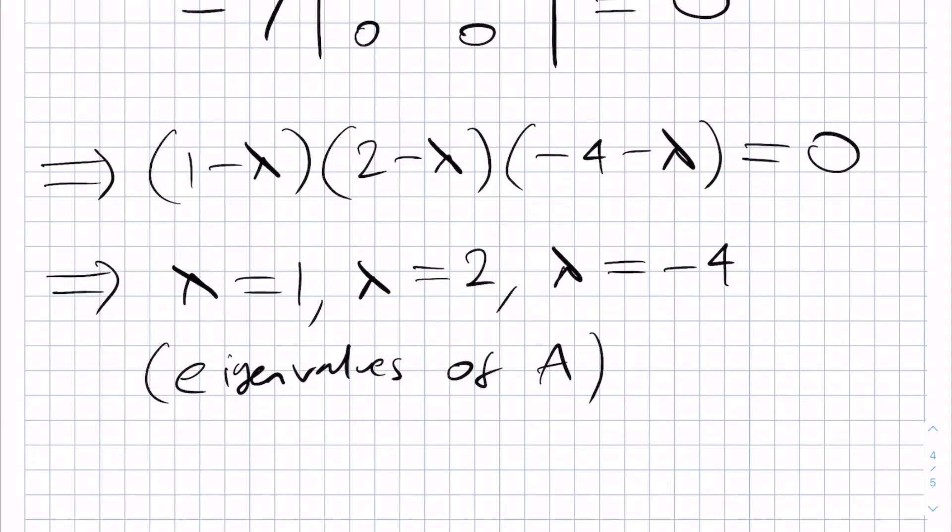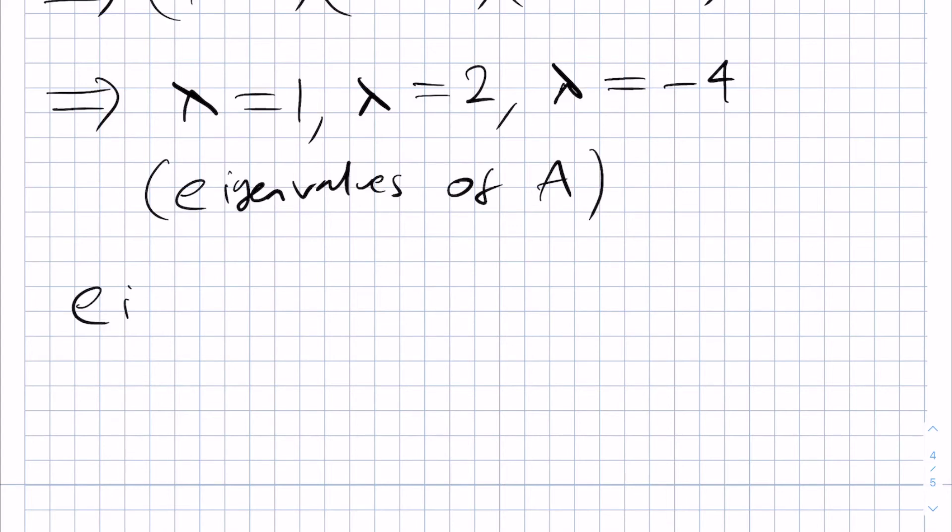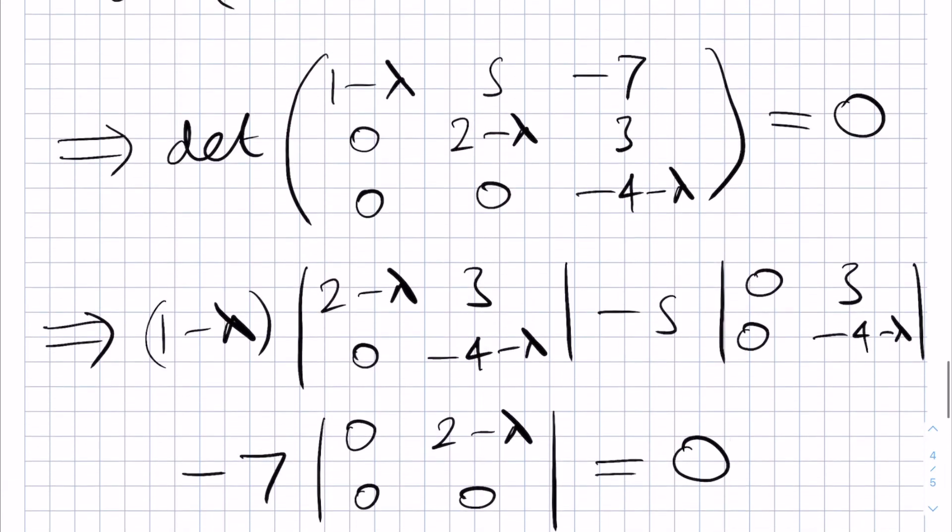This is true for any upper triangular matrix and so we can just read off the eigenvalues directly by looking at the diagonal elements. I'll just write down the eigenvalues are precisely the diagonal elements. Again this is only true for an upper triangular matrix or a lower triangular matrix as we'll discuss in a second, but hopefully you notice why this is the case.